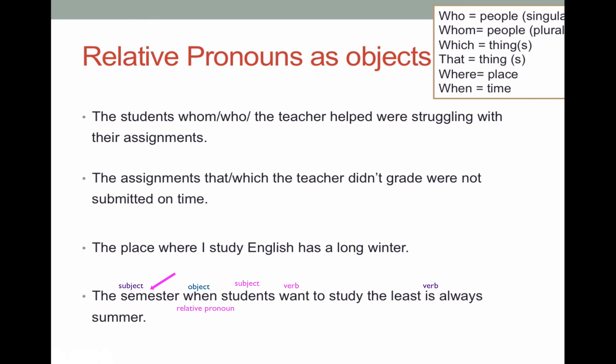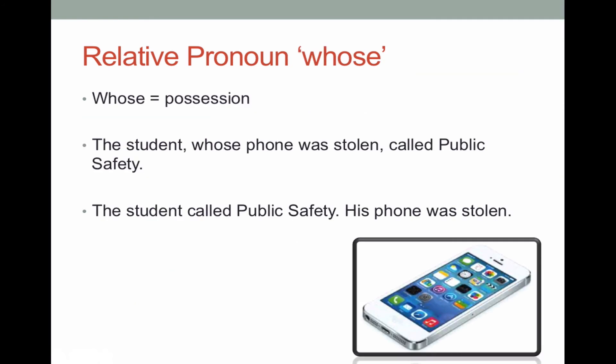We also have the relative pronoun 'whose,' which indicates possession. For example: 'the student whose phone was stolen called public safety.' 'The student' is my subject and 'called' is my verb in the main clause. The adjective clause is 'whose phone was stolen.' If I separate these into two sentences it would read: 'The student called public safety. His phone was stolen.' So 'phone' is the subject and 'was stolen' is the verb, and 'his' indicates possession — 'his' becomes 'whose' in the adjective clause to refer to the student and his phone.